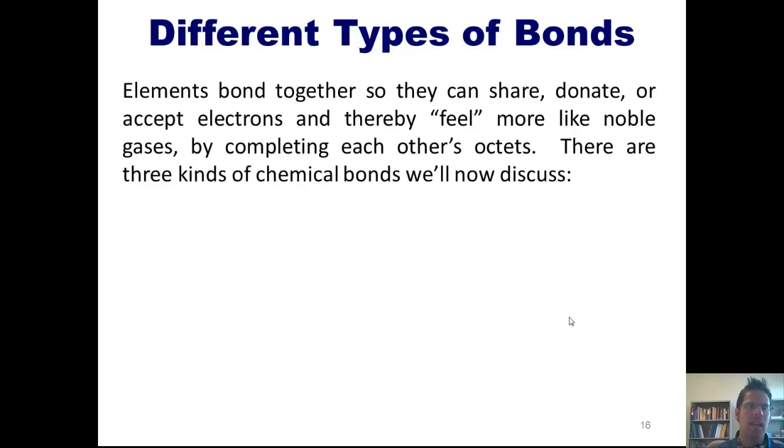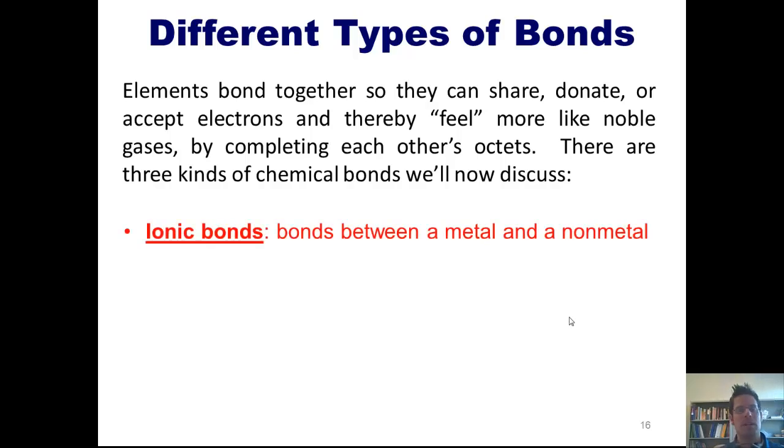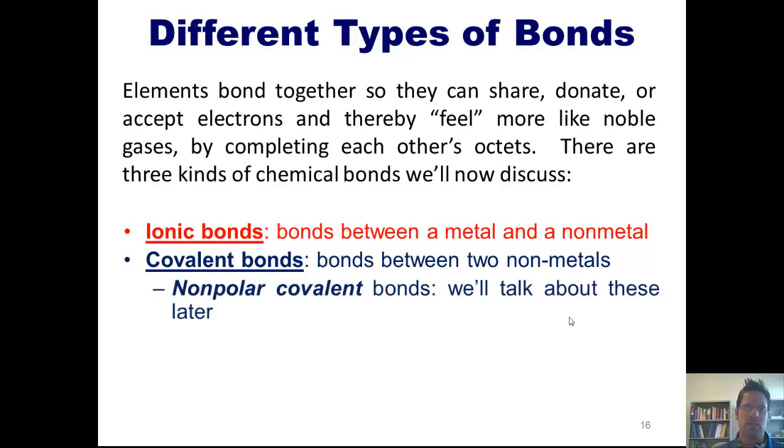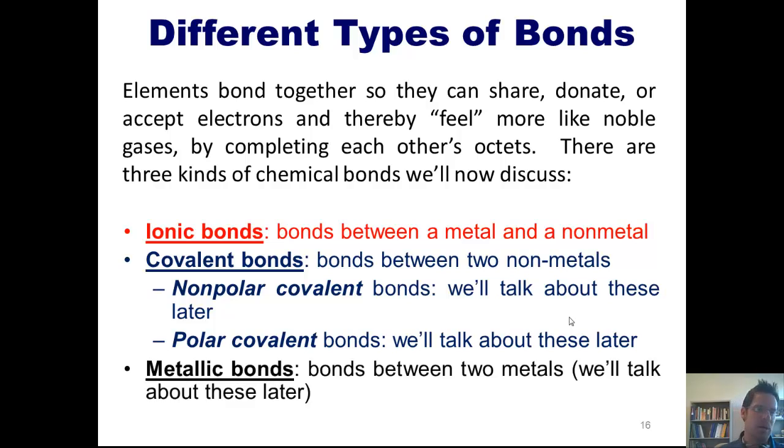Now, as I've mentioned earlier, elements bond together so that they can share, donate, or accept or give away electrons and thereby feel more like noble gases by completing each other's octets. This fact helps explain many of the ways in which elements behave chemically. Now, there are three different kinds of chemical bonds we'll now discuss. Ionic bonds, which are bonds between a metal and a nonmetal. Covalent bonds, which are bonds between two nonmetals. And I have to specify that there are two different types of covalent bonds: nonpolar covalent bonds and polar covalent bonds, which we'll talk about later. The last are metallic bonds, which are bonds between two metals themselves.